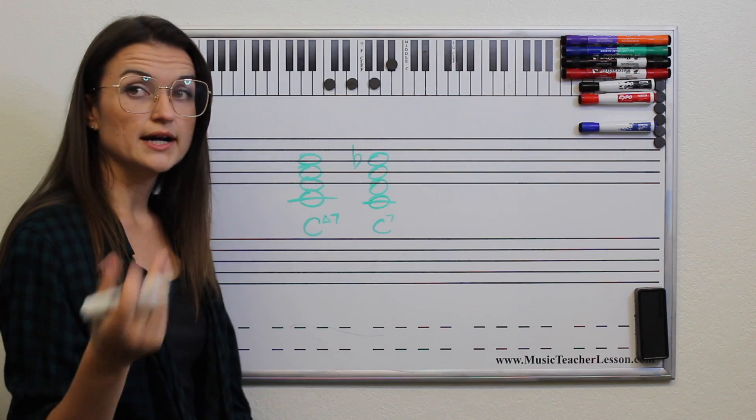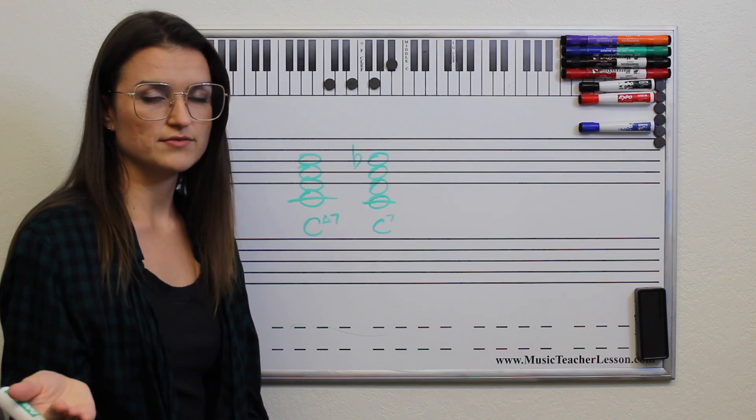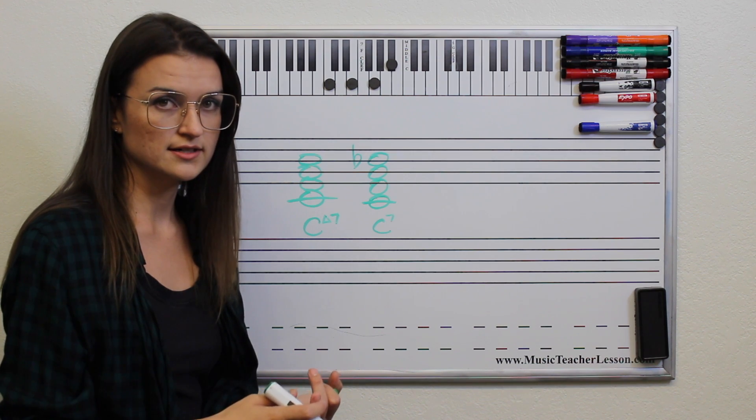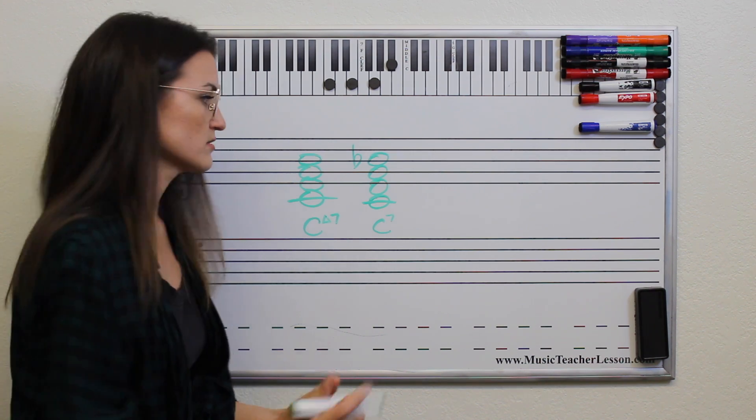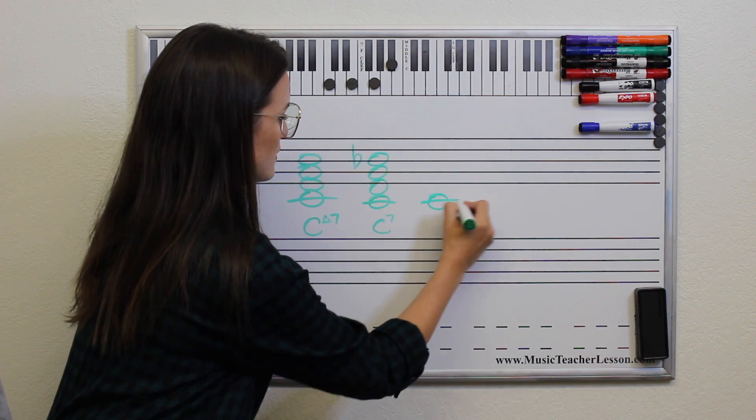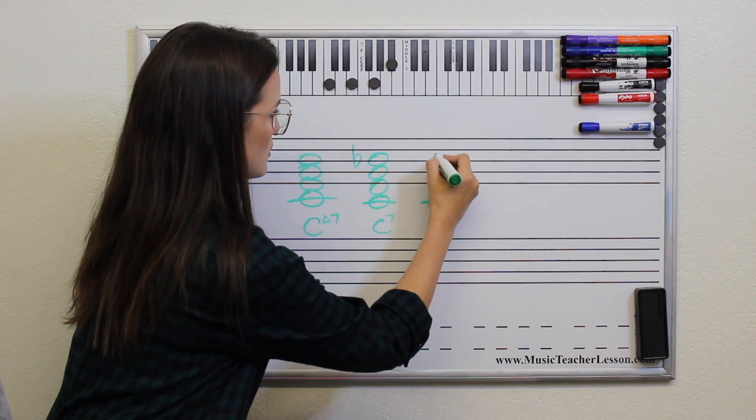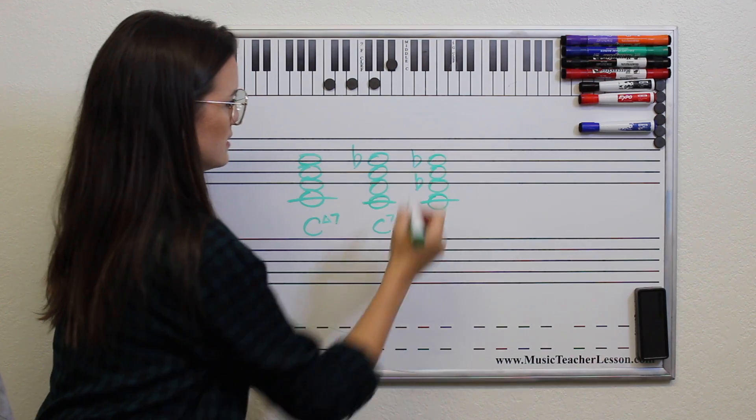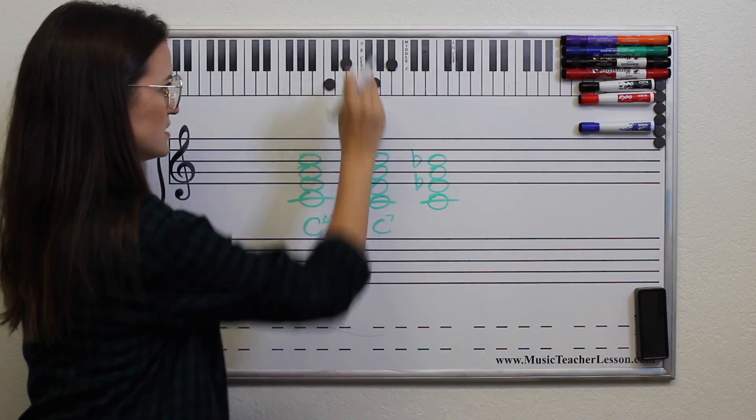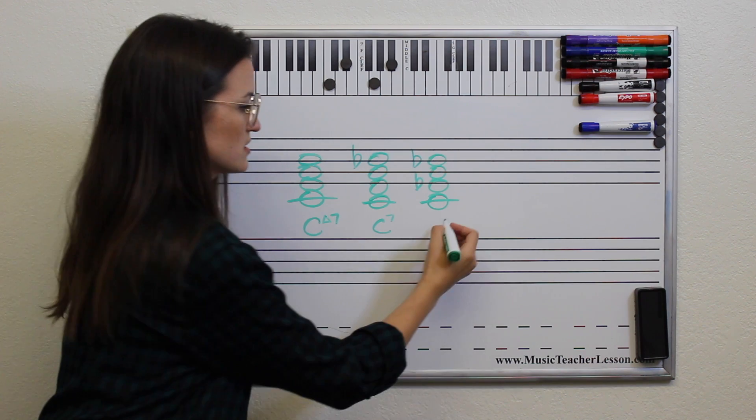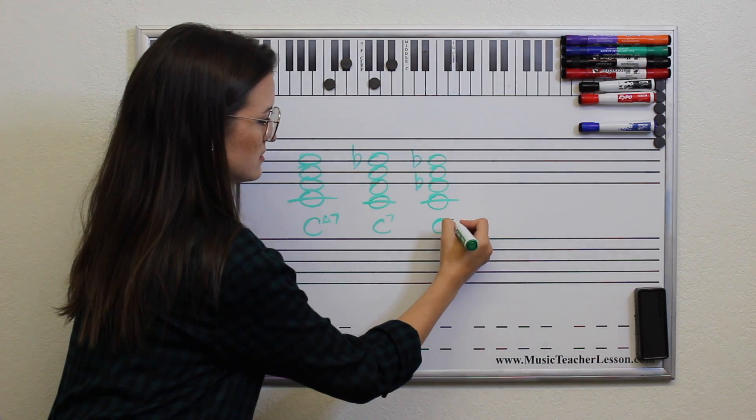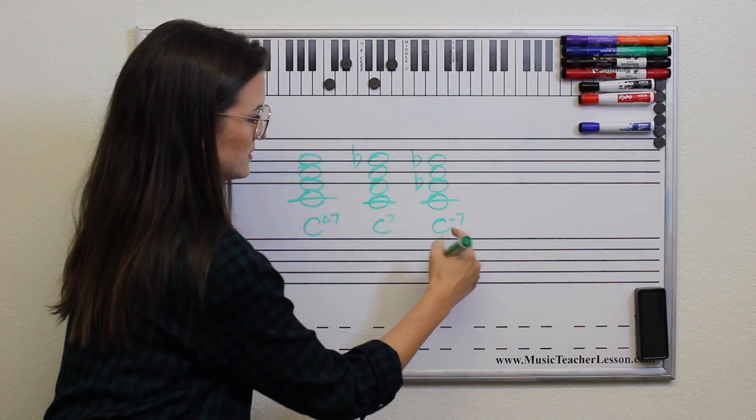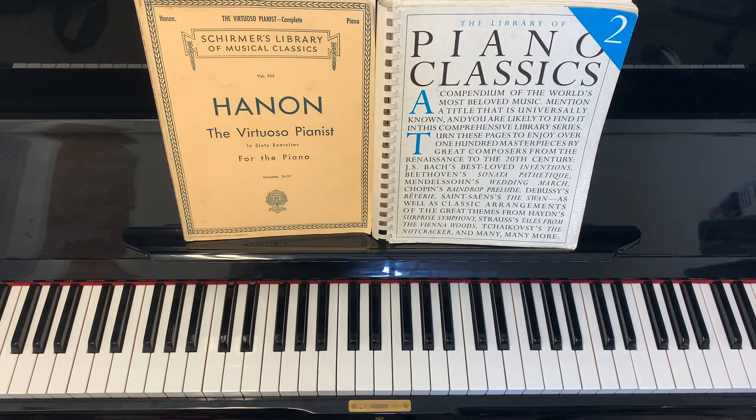We're going to do a minor 7th chord. So a minor 7th chord has a minor triad and then a flatted 7th. So C minor is E flat and then B flat. So do you see how only one note is changing in each of these 7th chords? So C minor 7 looks like that. A little dash. Here is C minor 7.